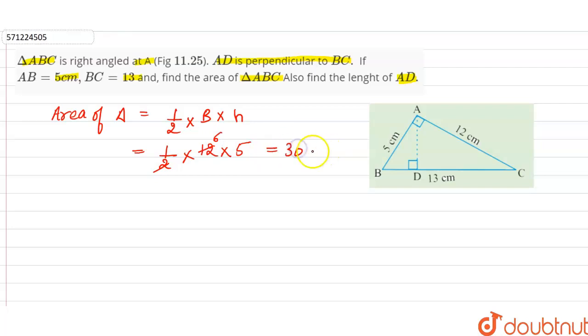So we calculate: one half into 12 into 5 — that gives us 6 into 5 which is 30. So the area of triangle ABC is equal to 30 centimeters square.